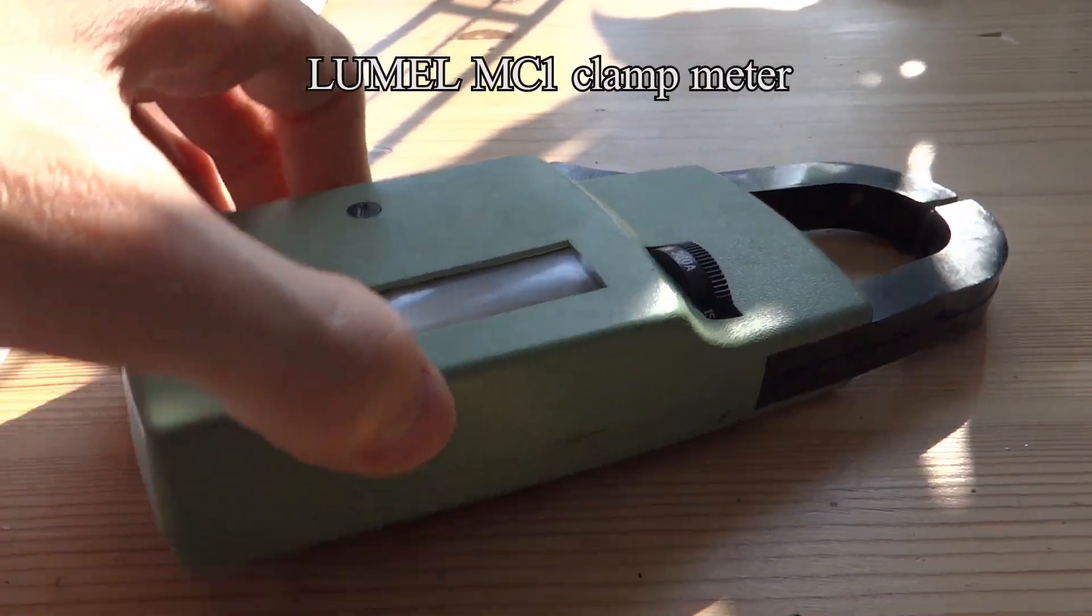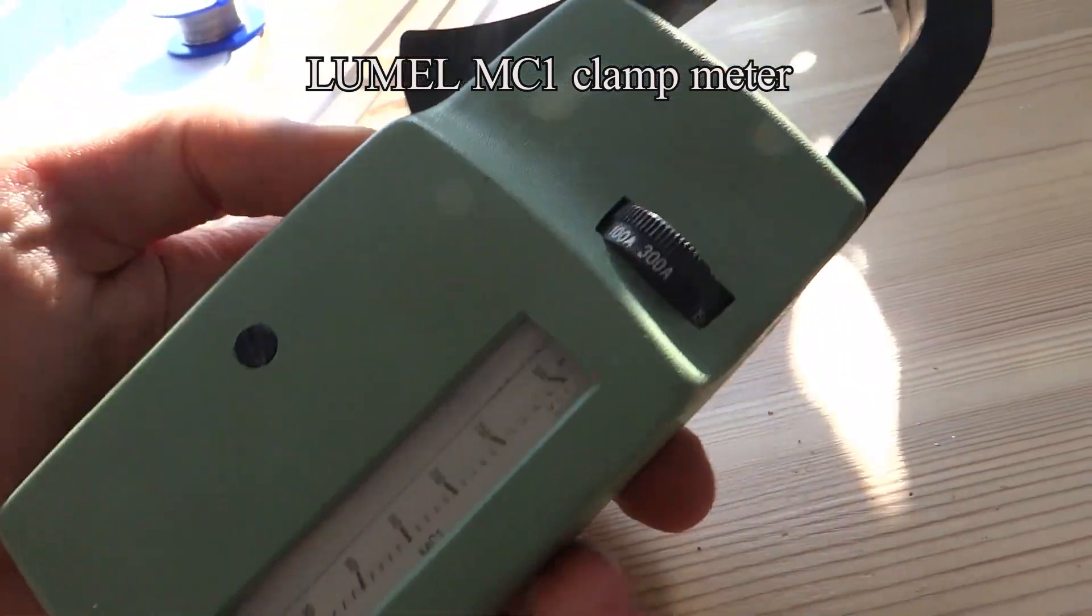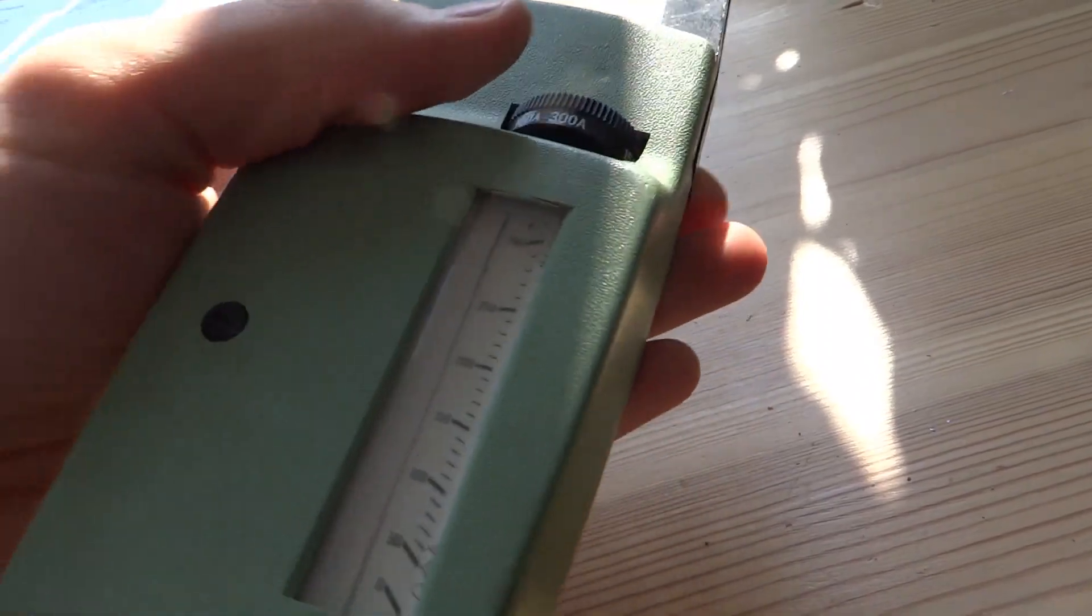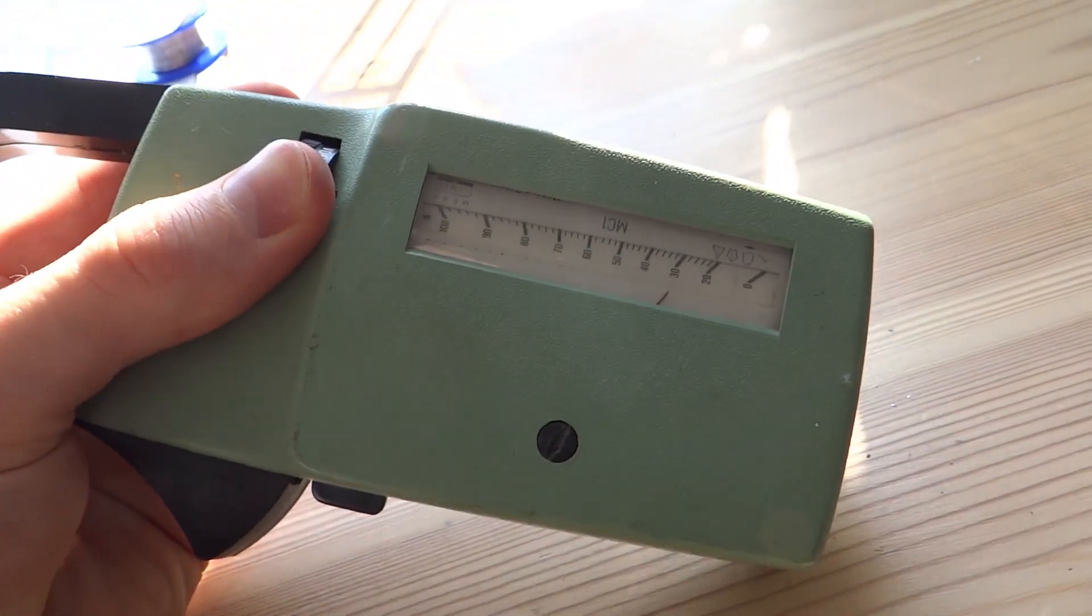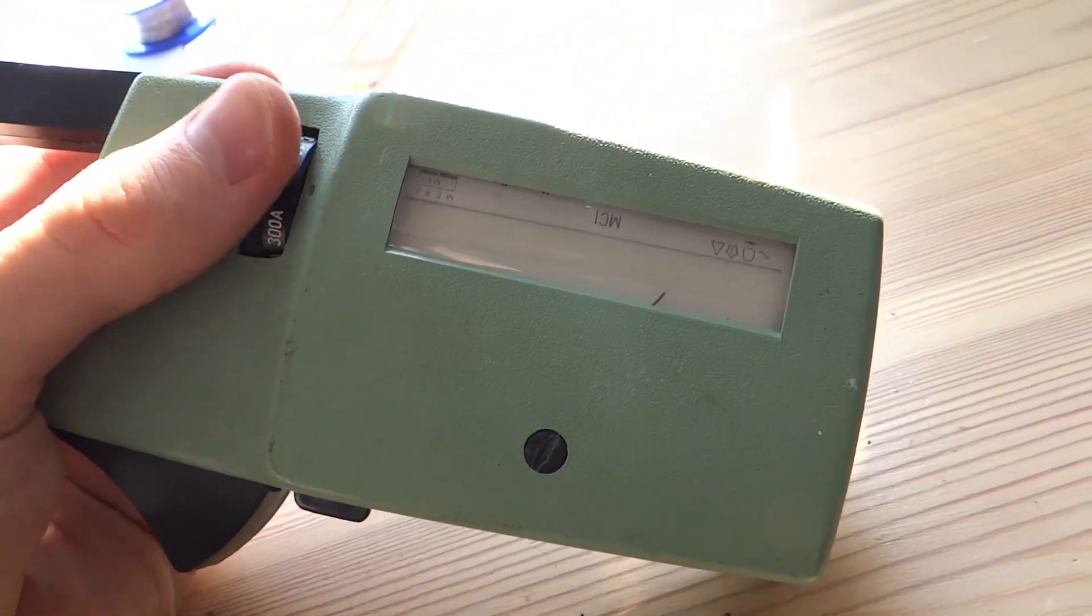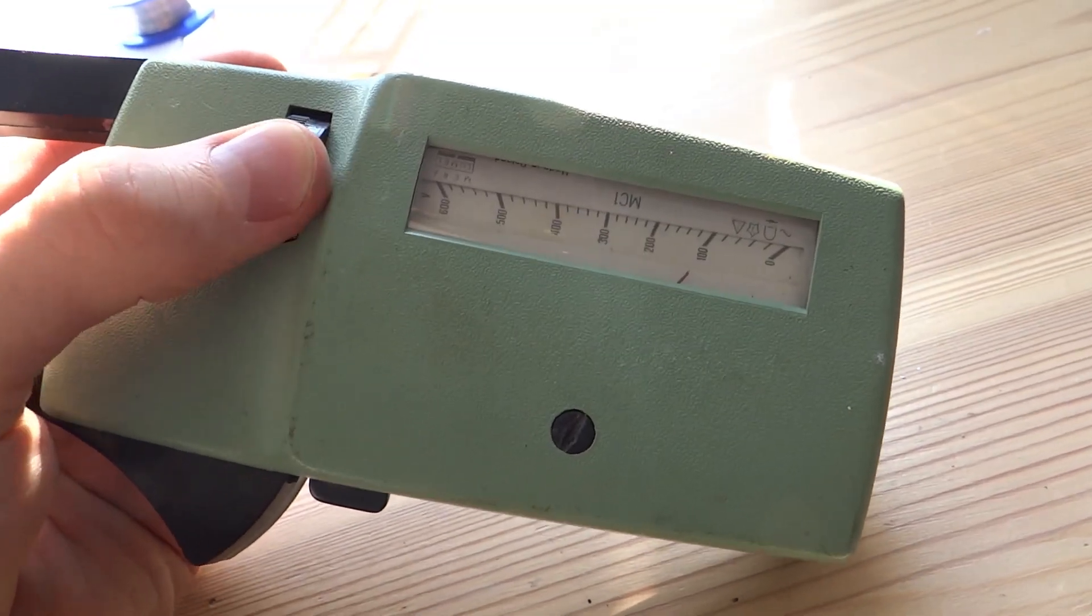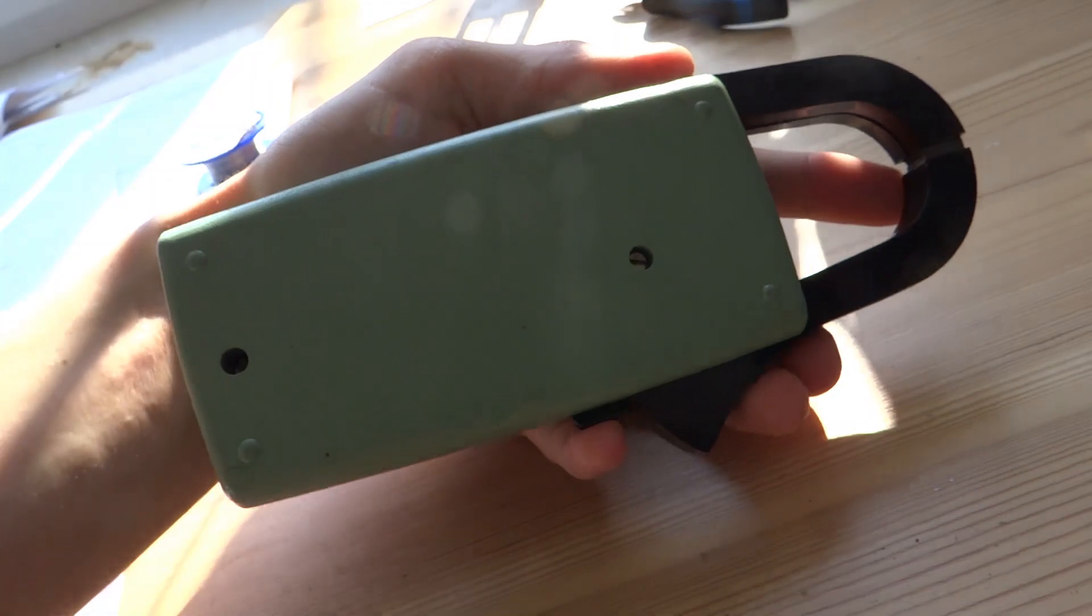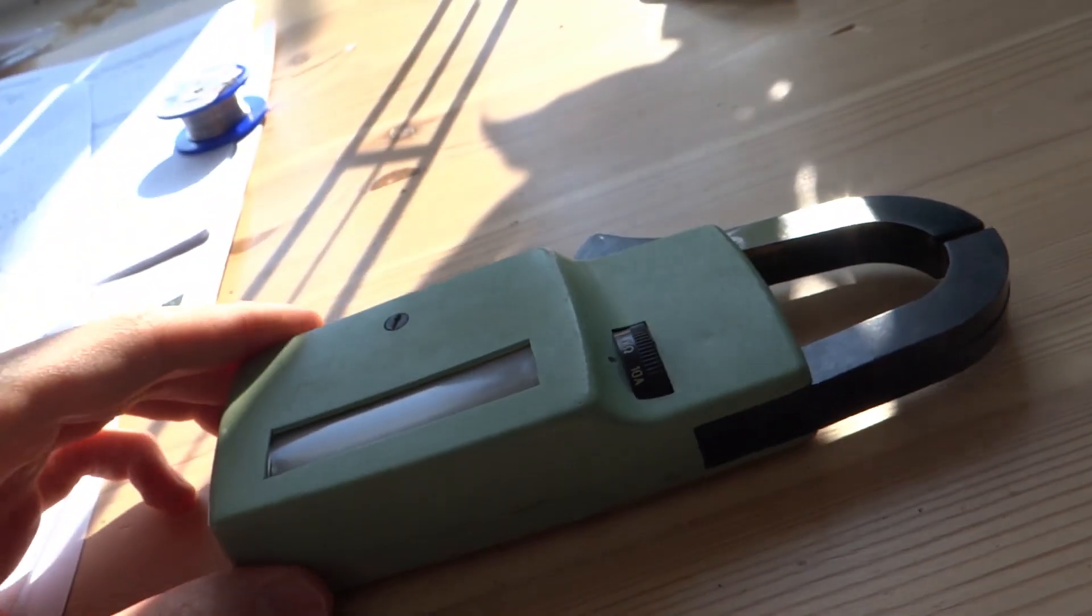Next up is this old clamp multimeter. As you can see it goes up to 300 amps. It also has other ranges like volts and apparently even kilo ohms. I think the current measurement will be the most handy though.